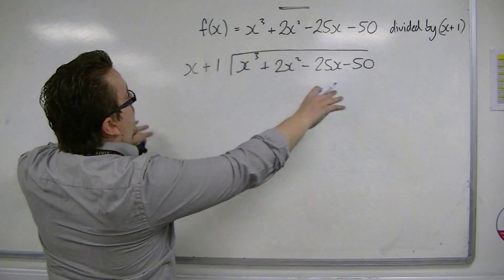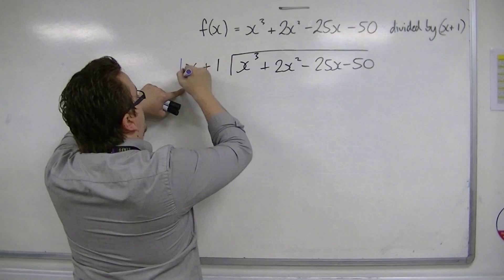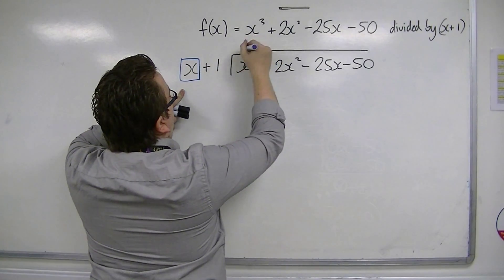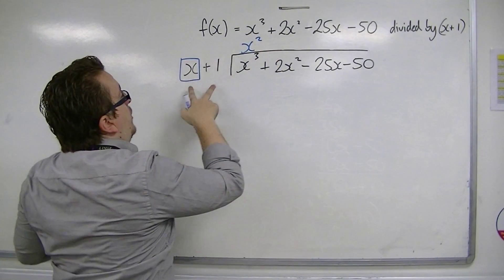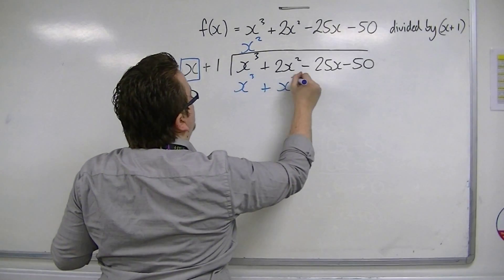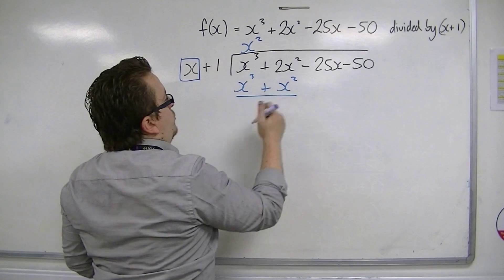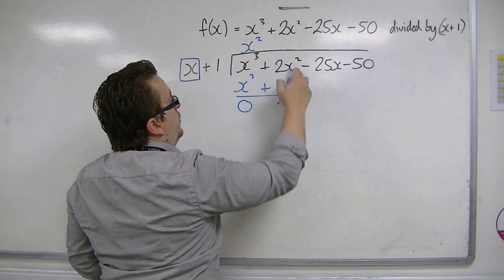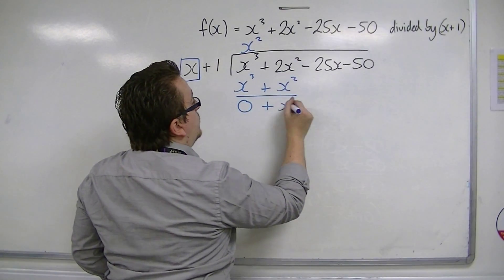I've already set it up so that x's into x cubed goes x squared. x squared times these two terms gives x cubed plus x squared. Performing the subtraction: 0, 2x squared take away x squared is x squared.